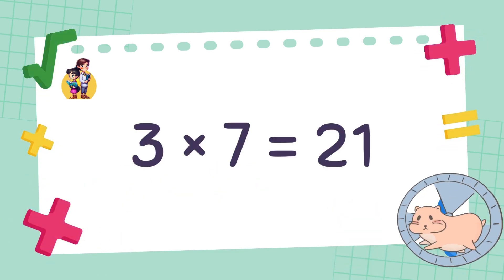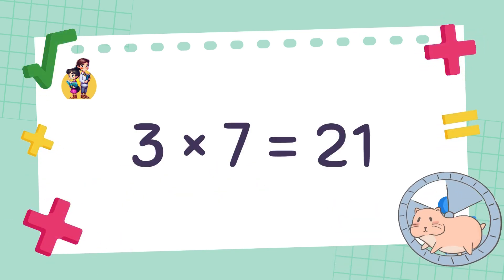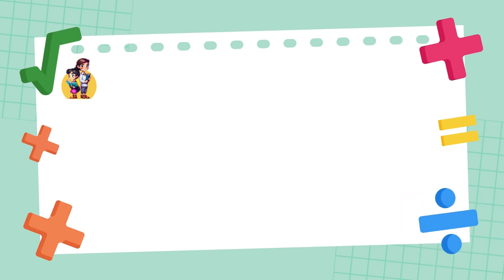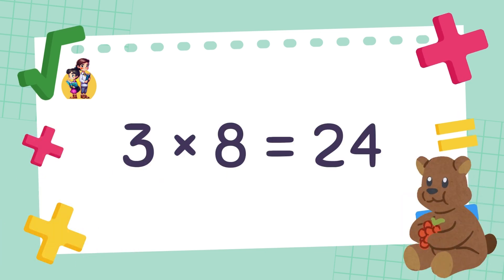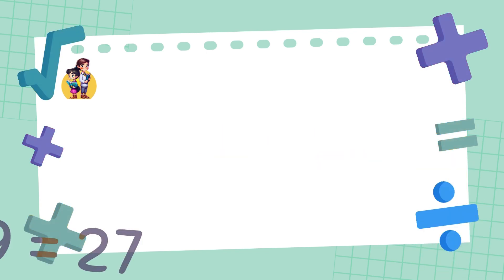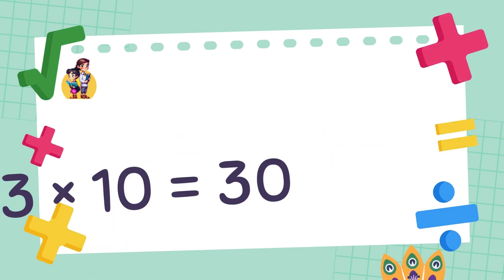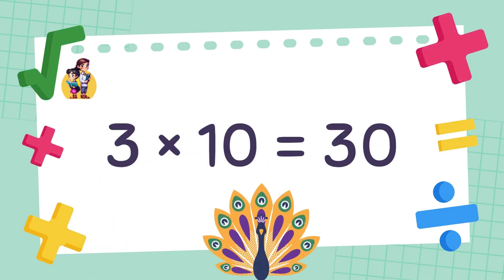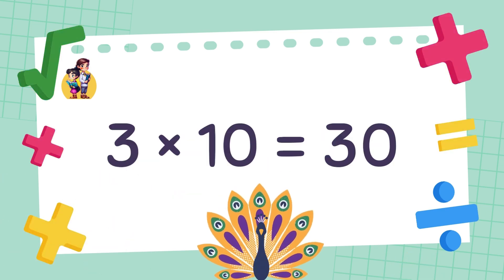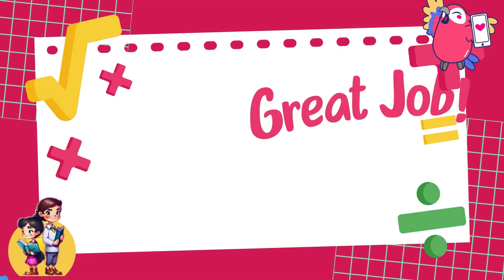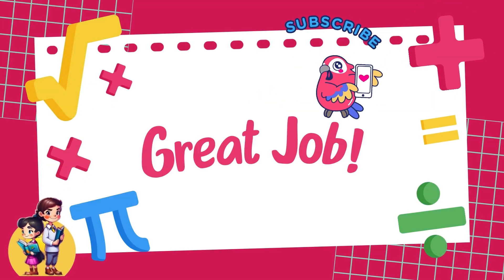3 times 7 is equal to 21. 3 times 8 is equal to 24. 3 times 9 is equal to 27. 3 times 10 is equal to 30. Great job!